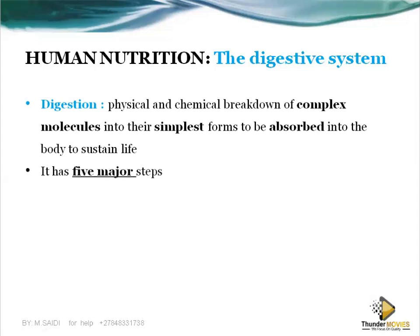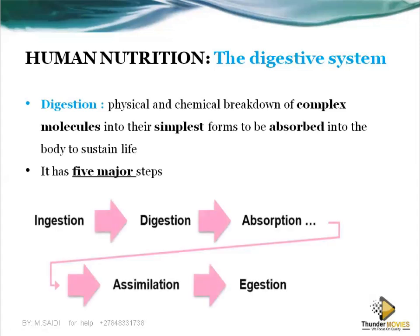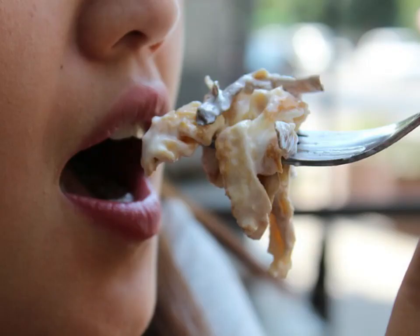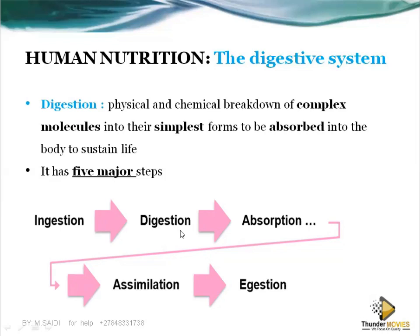Digestion has five major steps you need to know. Number one: ingestion — taking in food, putting it into the mouth. Number two: digestion — breaking down food into smaller particles. After breaking it down, the important ones are absorbed into the bloodstream. Number three: absorption — the important nutrients pass into the blood. Number four: assimilation — the food absorbed is put into use. The undigested food that is not absorbed continues through the digestive system.